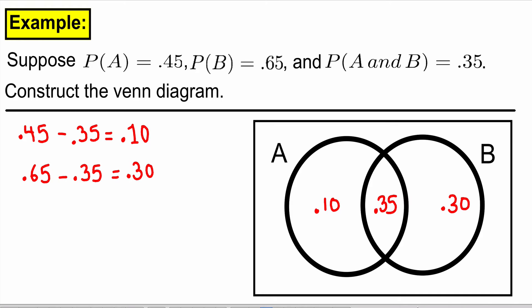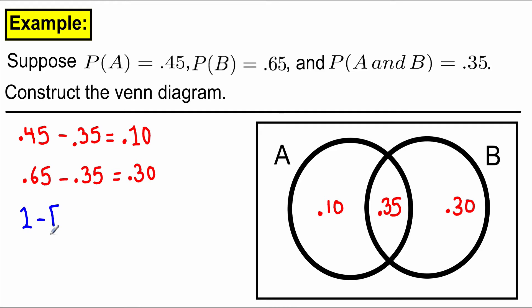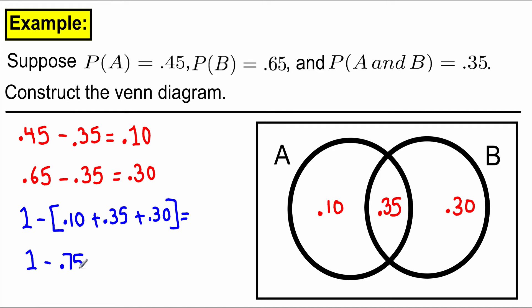Now, as I mentioned earlier, the sum of all probabilities should be 1. So we're going to take 1 minus all the numbers we have inside of the circles to find out what probability will be outside of A or B. So to make the sum of all probabilities inside of the Venn diagram equal to 1, we should have 0.25 outside of circles A or B.